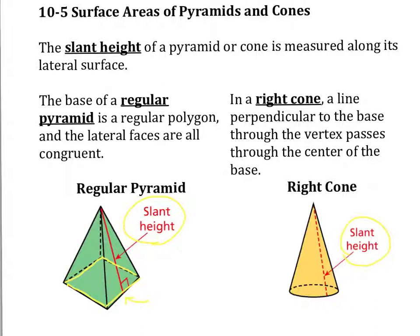In a right cone, a line perpendicular to the base through the vertex passes through the center of the base.